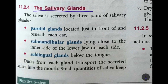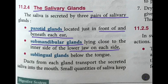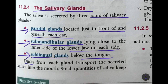Next we move on to the salivary glands. Saliva, which keeps our mouth moist, is secreted by three pairs of salivary glands. The first is the parotid glands, found just in front of and below each ear. The second is the submandibular glands, lying close to the inner side of the lower jaw on each side. The third is the sublingual glands, located below the tongue. There are ducts from each gland which transport the secreted saliva into the mouth.